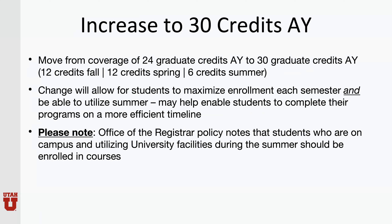Lastly, we are increasing from 24 graduate credit hours a year to 30 credits a year. 12 credits will continue to remain the maximum for fall and spring that tuition benefit will cover, but this will allow your students to maximize their tuition benefit opportunity in fall, spring, and the summer semester. Tuition benefit will cover up to 12 credits in the fall, 12 credits in the spring, and six credits during the summer semester, provided that they meet the minimum financial support requirements.